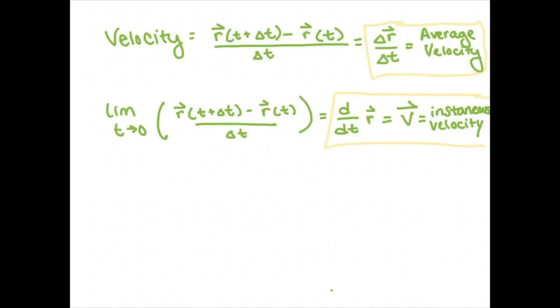The most important thing to remember about instantaneous velocity is that it is always tangent to the path of motion. Going back to our original sketch, if you have vector R, your velocity vector V is going to look like this, always tangent to the path of motion.